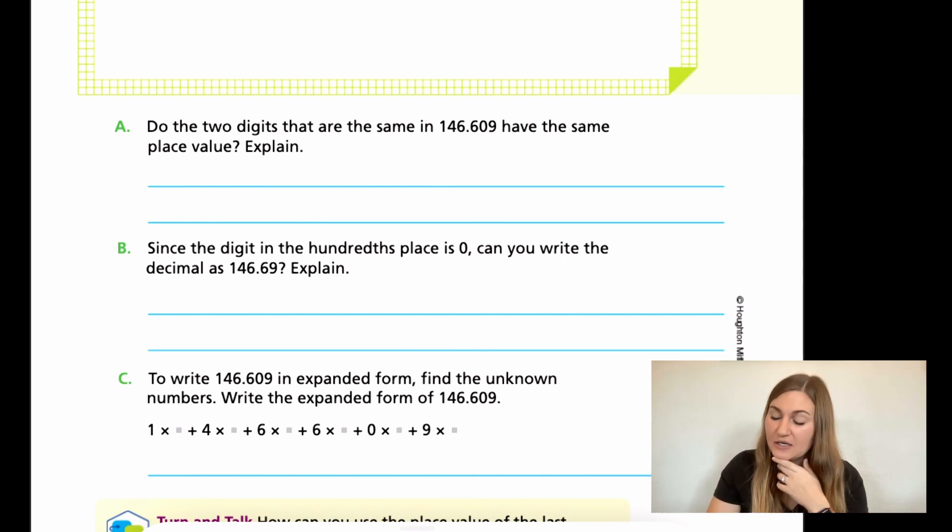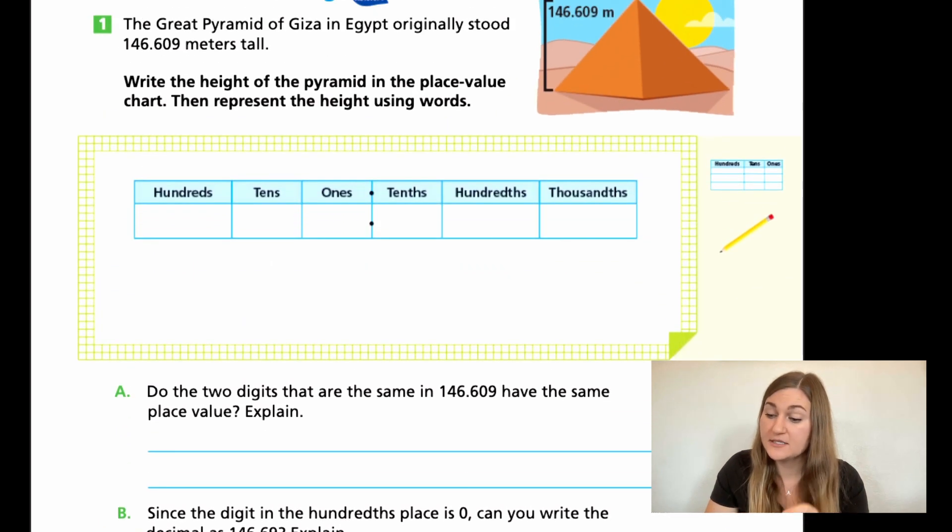Alright, great. Let's go ahead and go over these. So in my blue chart at the very top, I'm just going to fill it in one number at a time. So I know that I see my decimal point right in the middle, right after my decimal point is the 609. So I'm going to go ahead and fill that in. And then in front of my decimal, I have 146. So luckily there's no extra boxes or charts to fill in. It's just one number, exactly how it shows.